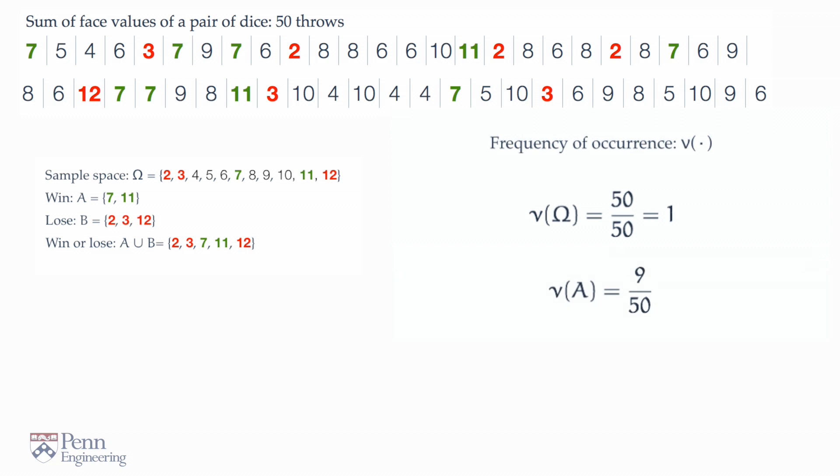What about the event that one wins on the first throw? In the 50 games that have been begun, we notice that there are exactly 9 protagonists who rolled a 7 or an 11. And therefore, it is natural to ascribe to the chance of winning on the first throw the ratio of 9 to 50.